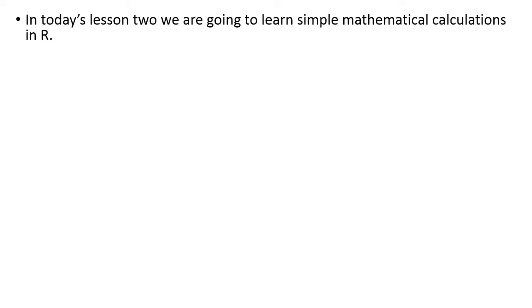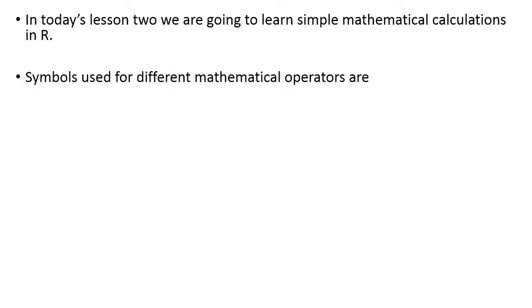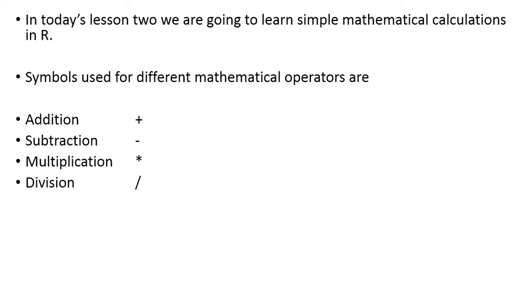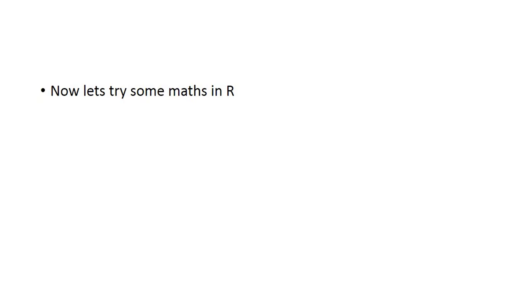In today's lesson number two we are going to learn some simple mathematical calculations. The symbols you can use in R for different mathematical operations are: plus sign for addition, dash sign for subtraction, asterisk for multiplication, and slash for division. To find out the quotient of two numbers use percent-slash-percent, and for finding the remainder use percent-percent. To give preference to one operation over another in a complex equation, use parentheses.